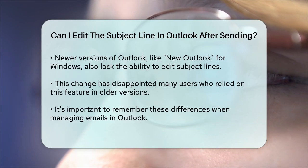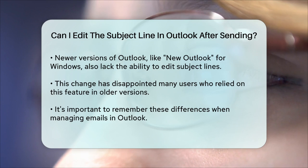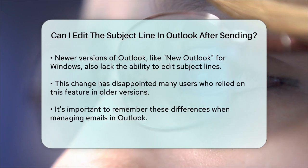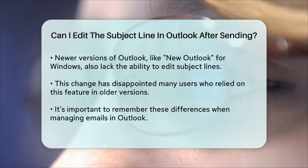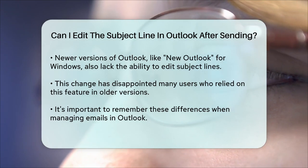In summary, if you're using the desktop version of Outlook, you can edit the subject line of received emails, but this option is not available in the online version or the newer New Outlook for Windows. This distinction is important to keep in mind when managing your emails.